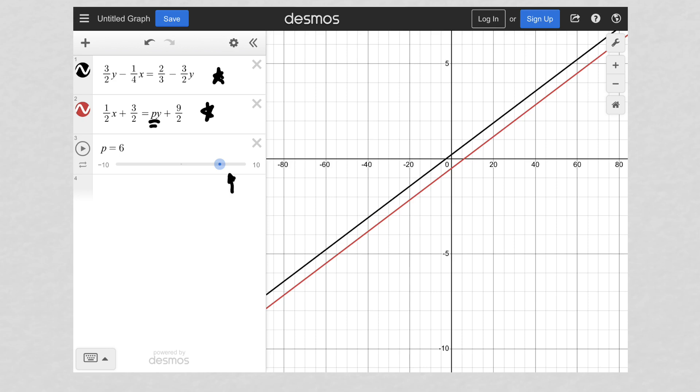That slider traditionally is between negative 10 and positive 10 and starts off at zero. And then you can slide either left or right to ascertain what value you want P to equal, given the parameters of the question itself.